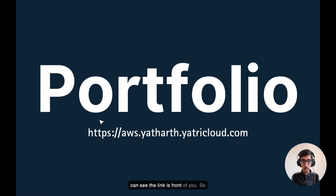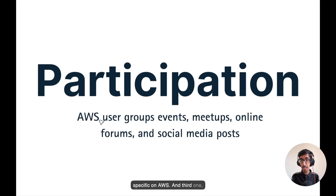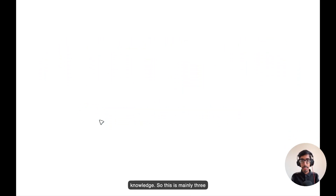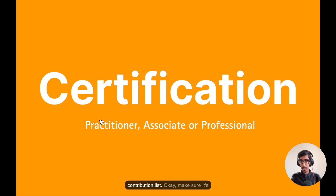You can see the link on screen. This portfolio is not very high-level, but it's a solid basic one. You can submit your portfolio if you have one that is specific to AWS. The third contribution is participation in different AWS events, meetups, and social media posts where you actively share your knowledge. These are the main three contributions to focus on. The fourth item is certifications — Practitioner, Associate, or Professional — which you mention in your application in the question-and-answer section, not in the contribution list. Certifications will not count as a contribution.